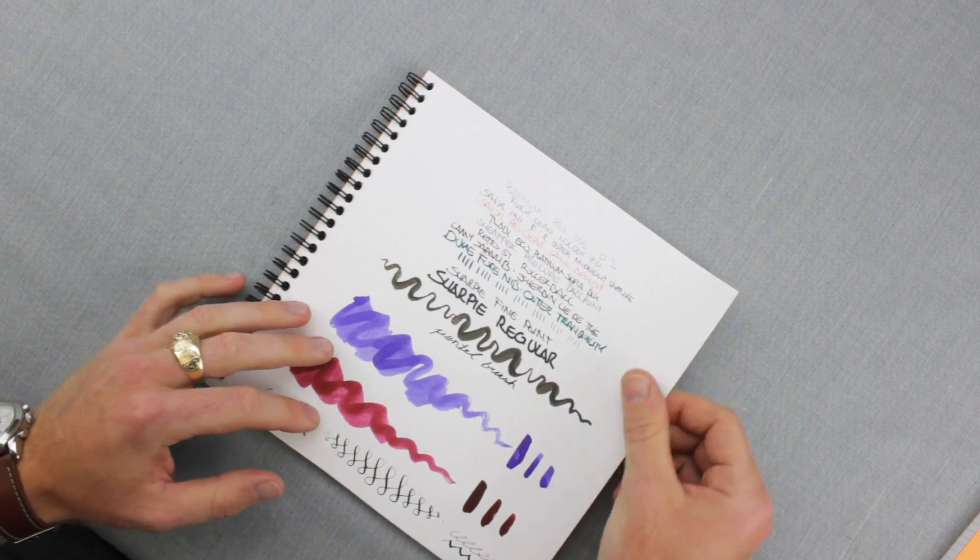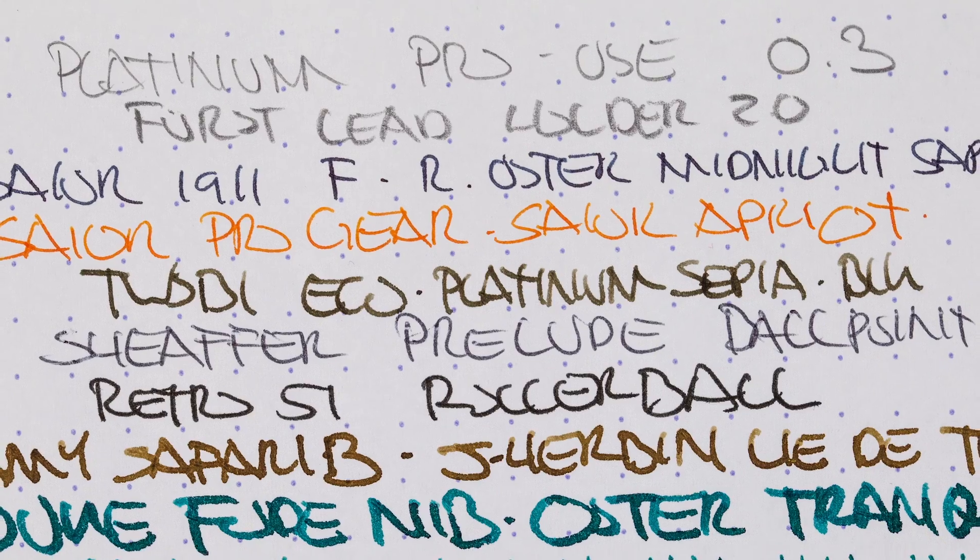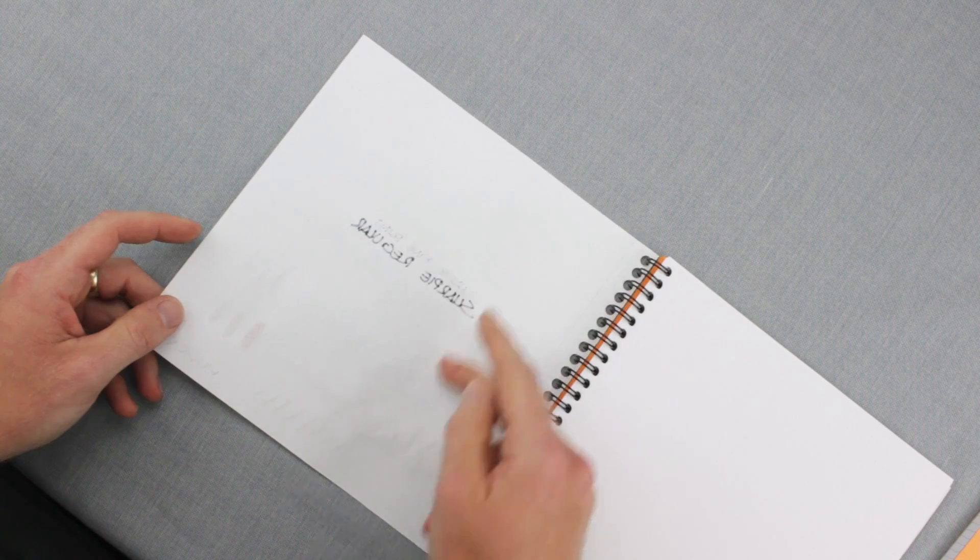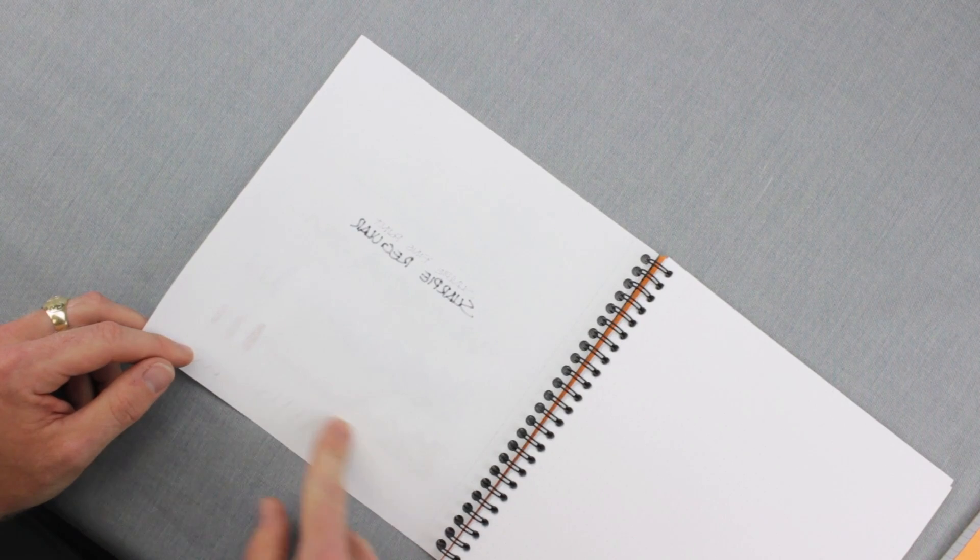The paper is Rhodia's 80 gram paper. It performs really well with your normal writing instruments. As you can see, there's very little bleed through, some show through, but really the only problem area was the Sharpies that had a good amount of both.